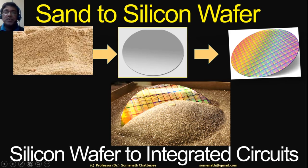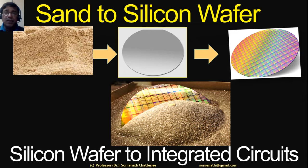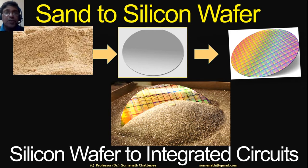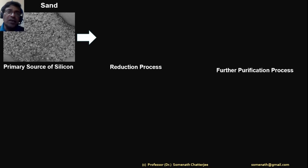So far in this presentation, the first part involves how we can do the fabrication or manufacturing of a silicon wafer. The next part covers the types of silicon wafer. The next phase will show how to determine or identify the different types of silicon wafer by a real-time experiment. So next: what is the primary source of silicon? I already told you — it is nothing but sand.